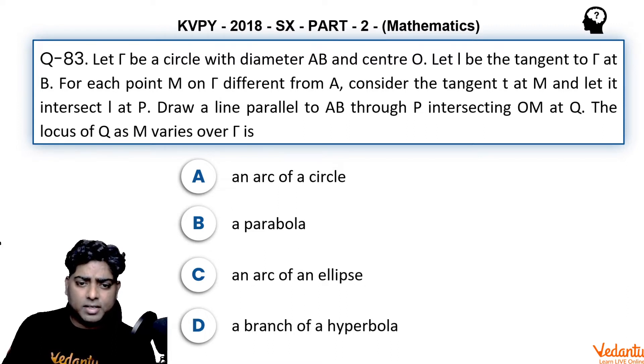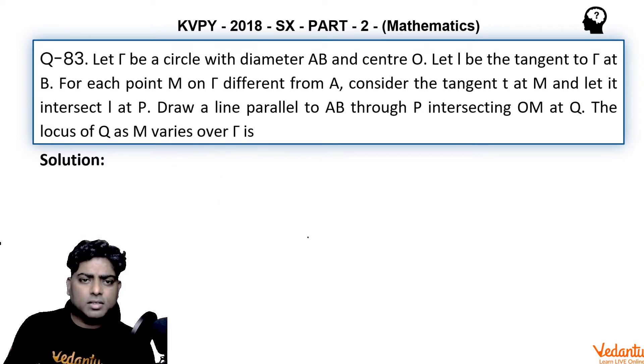Options given are: an arc of a circle, a parabola, an arc of an ellipse, or a branch of hyperbola. The question is geometrical. Let's see how we can track the locus of point Q.